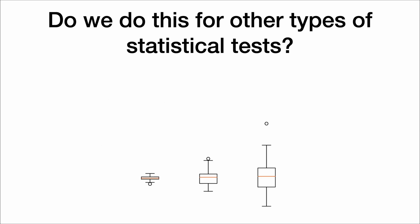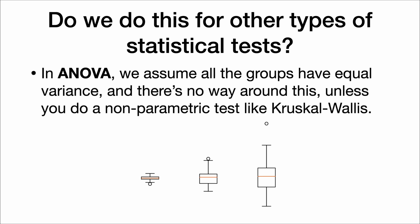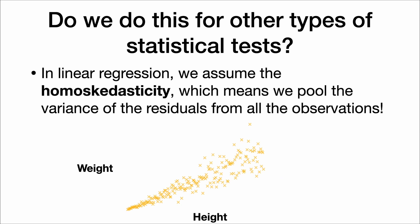Now, do we do this for any other type of statistical test? Well, in the extension to the two-sample t-tests, ANOVA, which is when we have more than two groups, we have to assume all the groups to have equal variances. And there's no way around this unless we do a completely different test, like a Kruskal-Wallis test, which is called a non-parametric test because it doesn't rely on these assumptions.